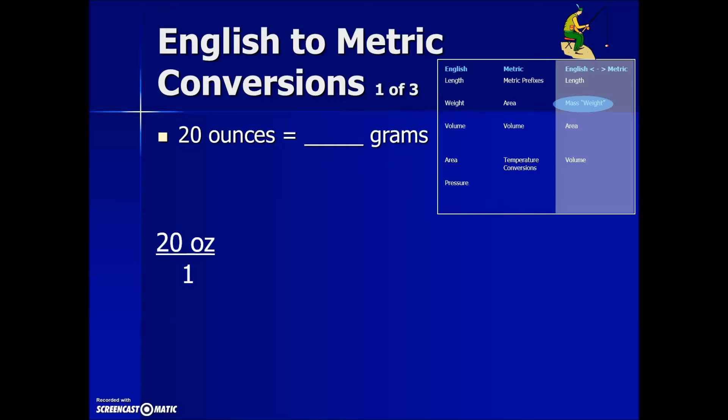So to do our conversion, we'll take the given measurement, express it as a fraction with a denominator of 1. We will take that relationship between ounces and grams, putting it in a conversion factor fraction such that the ounces are going to cancel out. So the actual value is 1 ounce is equal to 28.3 grams.